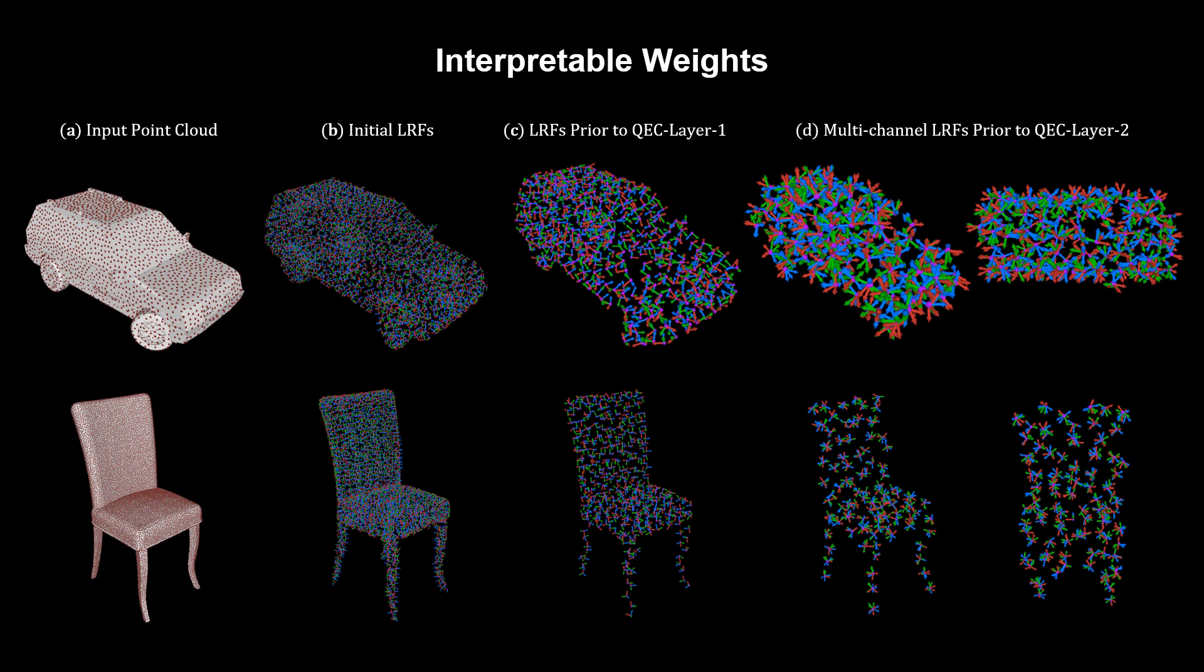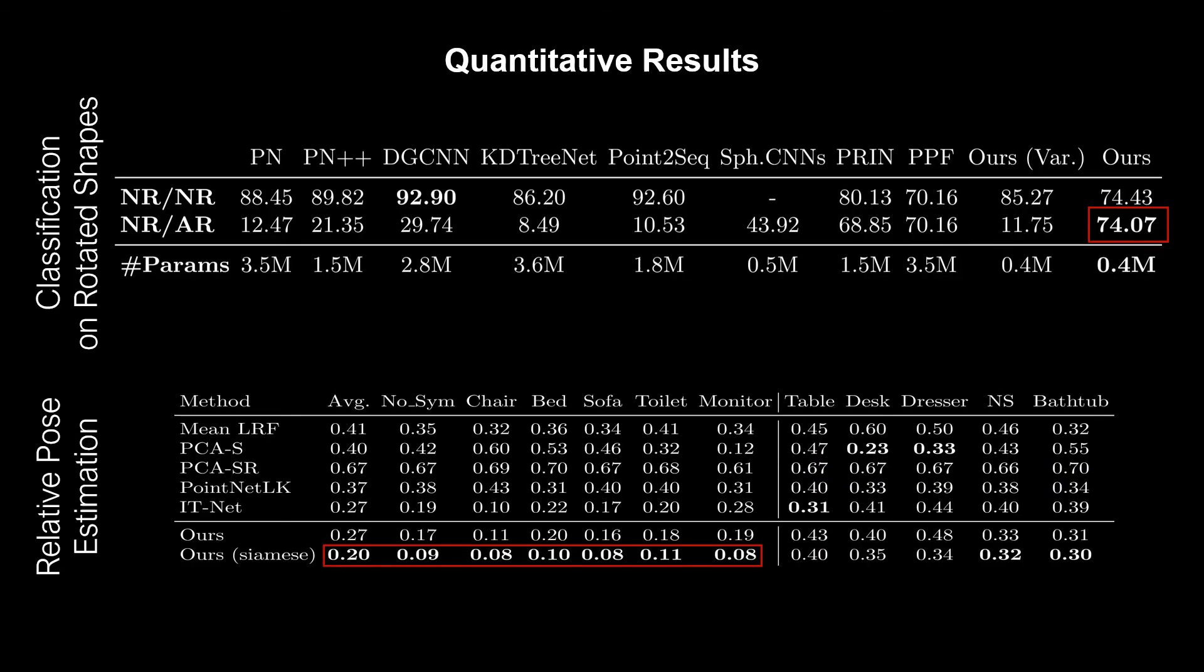Finally, thanks to the end-to-end equivariance, the weights of our network can be monitored and visualized across layers. This can provide additional insights into the network and its predictions. In both applications, classification and relative pose estimation, we show state-of-the-art accuracy on ModelNet dataset with a reduced number of parameters. Note that we do not supervise the rotation regression and use classification as the only training signal.